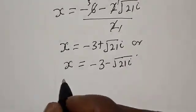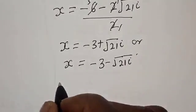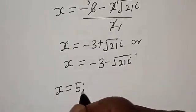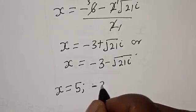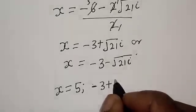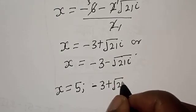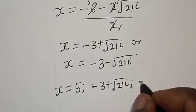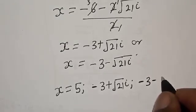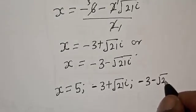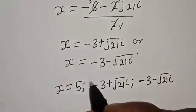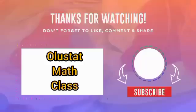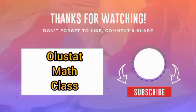Therefore our final answers — the roots of this equation — are s equals 5, s equals minus 3 plus root 21 i, and s equals minus 3 minus root 21 i. That is our final answer. If you enjoyed the class, please don't forget to like, share, comment and subscribe. Thank you.